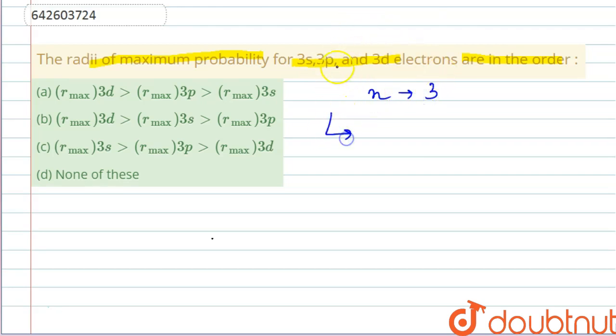Now to find the maximum probability of electron, we will take a look on the quantum number that is l, as azimuthal or angular quantum number. This angular quantum number tells us about the shape of the orbital.